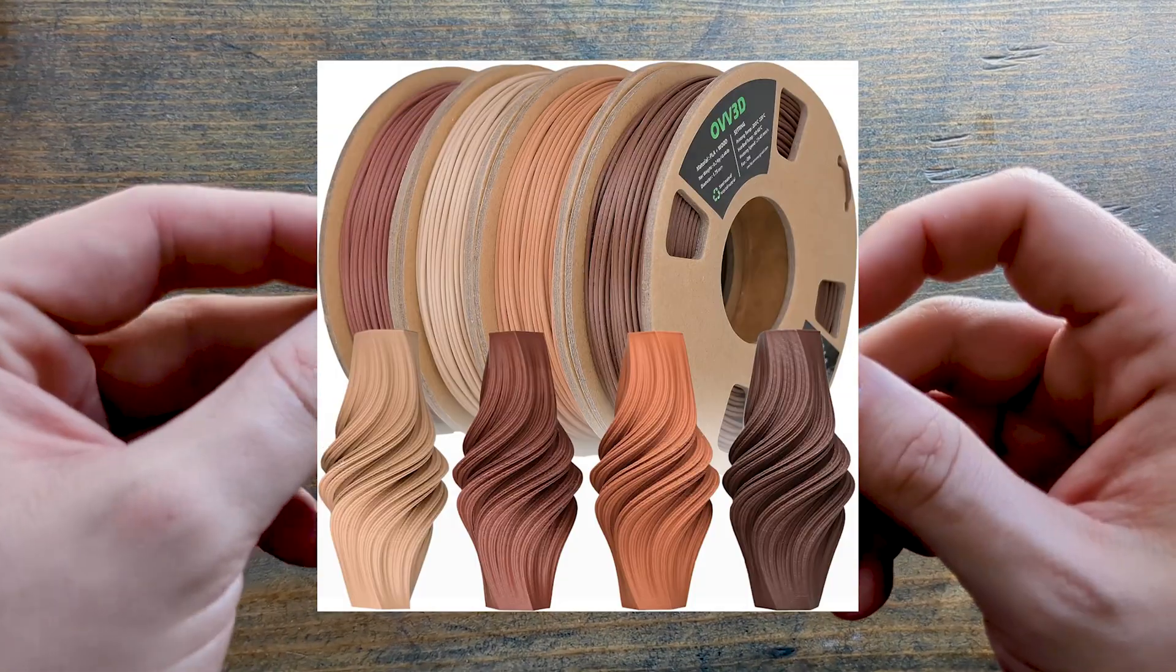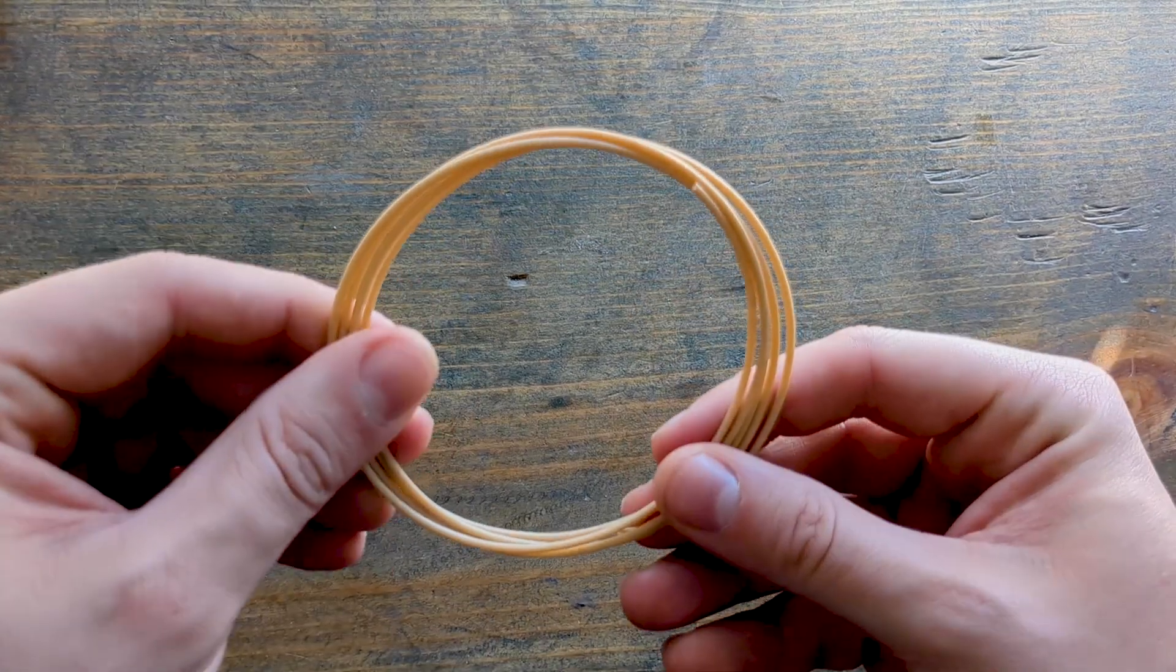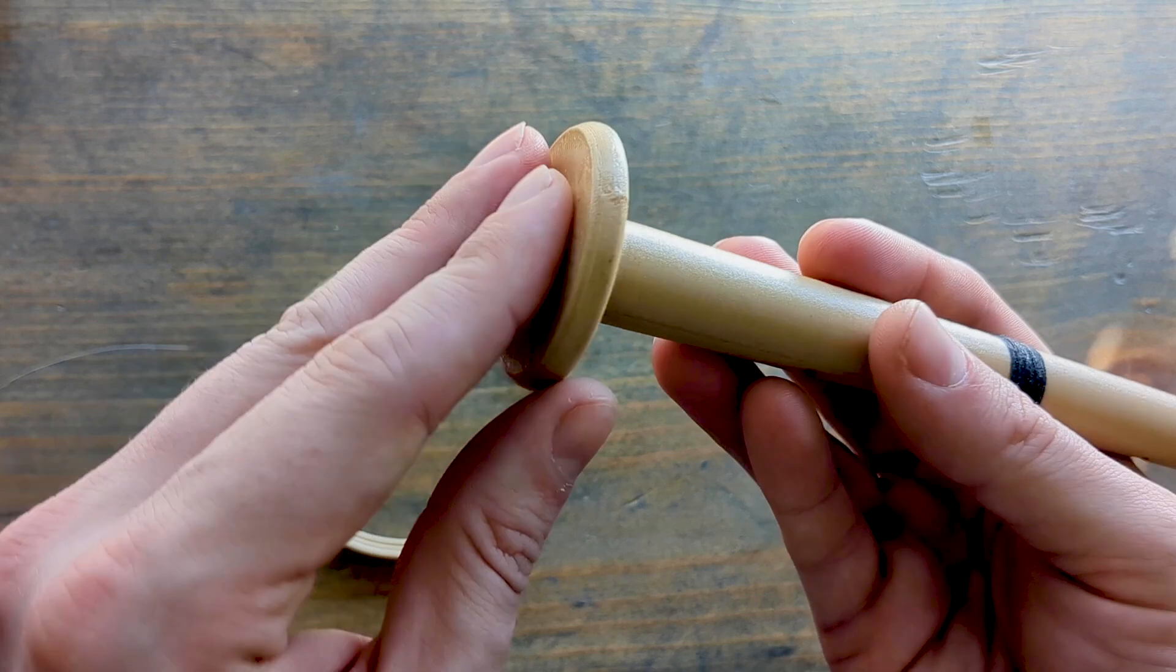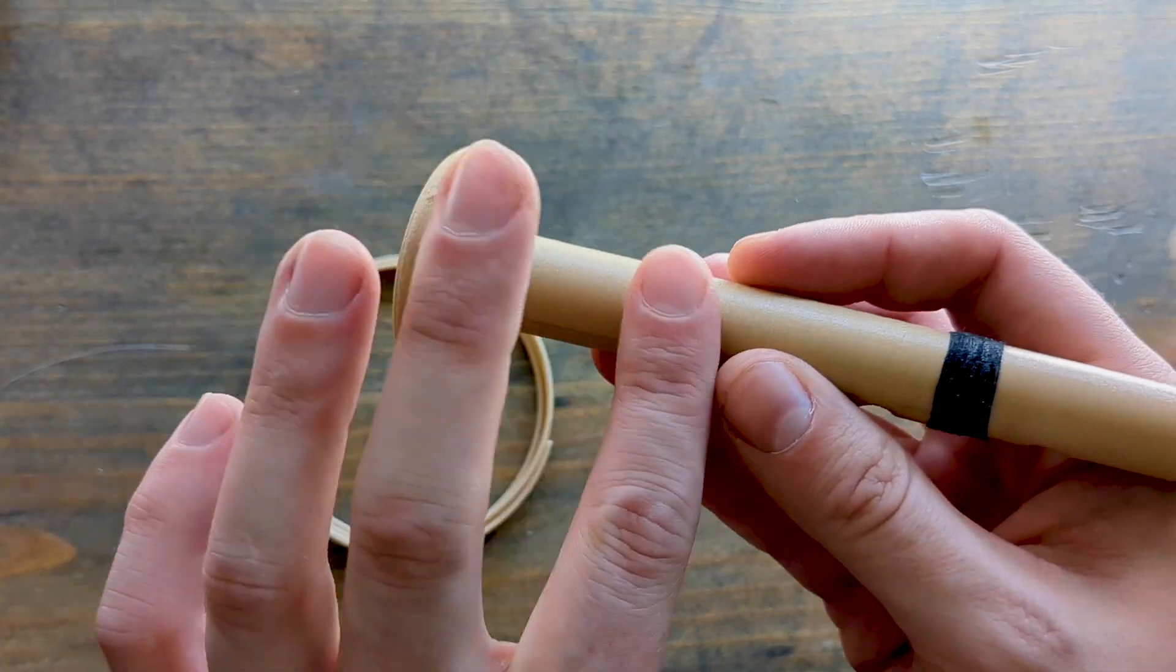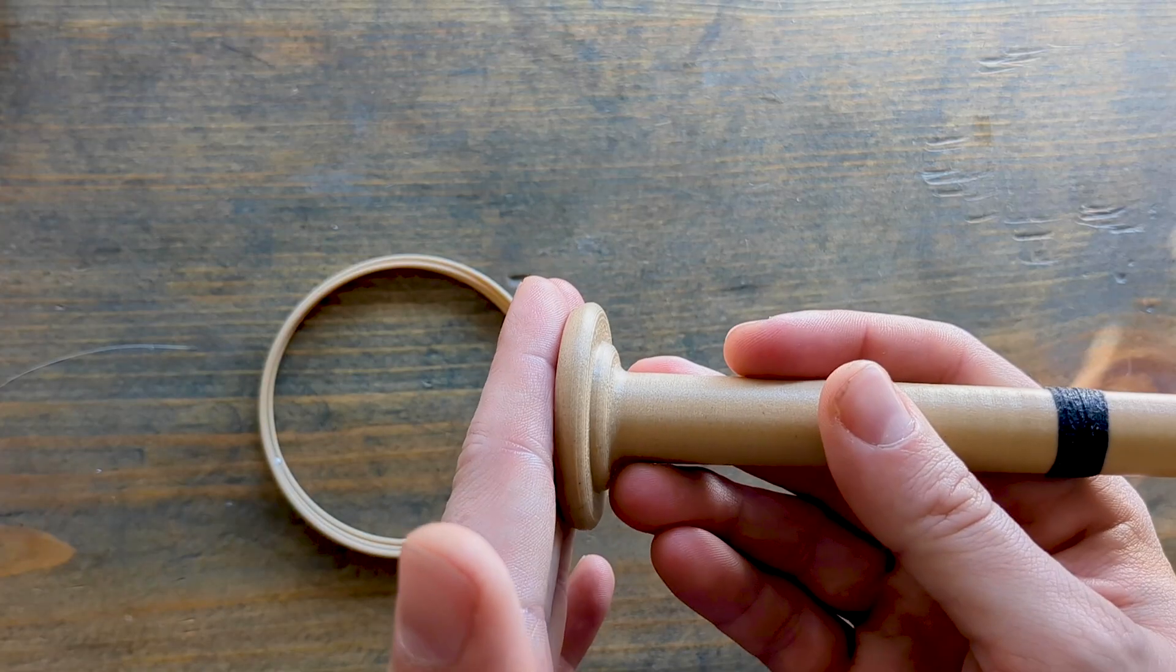And this stuff comes in all sorts of colors, but more common than not, you'll see it in this kind of light wood color. And when you print it out, it looks something like this, kind of a uniform finish and just kind of that wooden texture. You can also stain it and treat it like wood. Pretty cool.